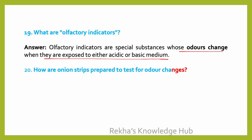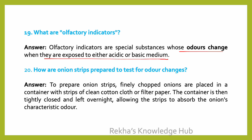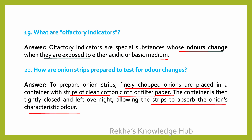How are onion strips prepared to test for odor changes? To prepare onion strips, finely chopped onions are placed in a container with strips of clean cotton cloth or filter paper. The container is then tightly closed and left overnight, allowing the strips to absorb the onion's characteristic odor.